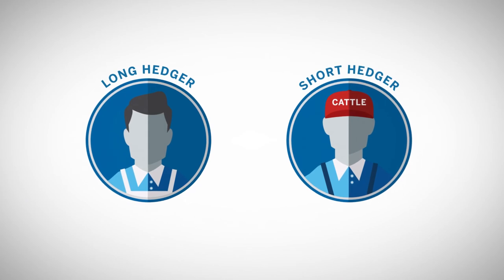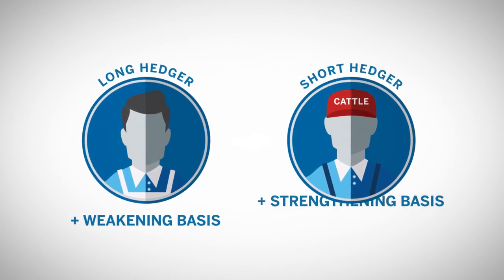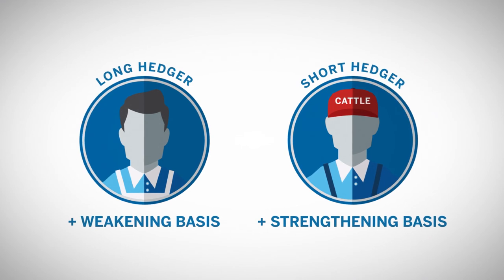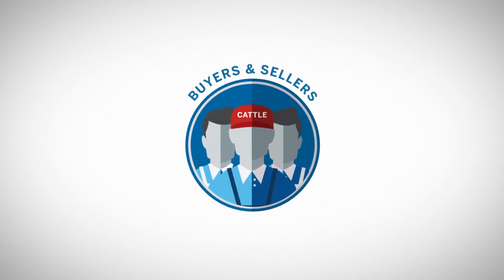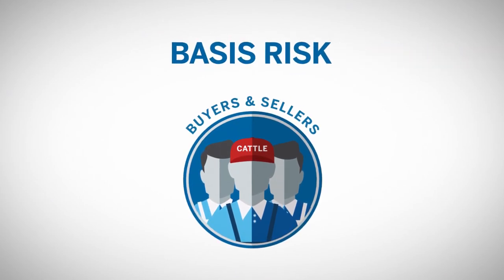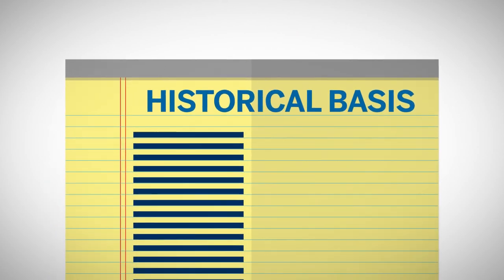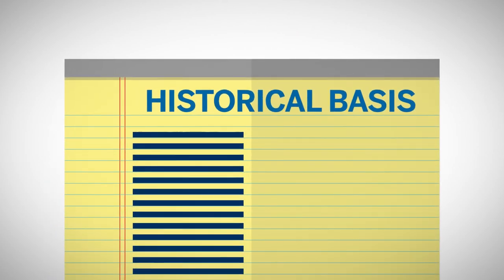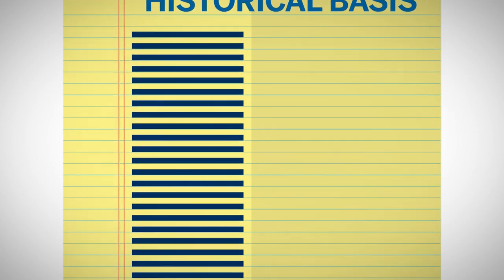Again, note that long hedgers benefit from a weakening basis, and short hedgers benefit from a strengthening basis. The behavior of the basis in livestock markets can have a significant impact on the performance of a hedge. By hedging with futures, livestock buyers and sellers are essentially reducing their price risk by assuming basis risk. Luckily, basis risk is typically much lower than price risk, so hedgers are usually quite happy to make this tradeoff. Planning is key, and it's important that hedgers maintain historical basis records in order to make realistic basis expectations for the time they plan to buy or sell.